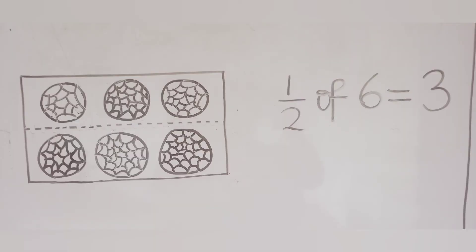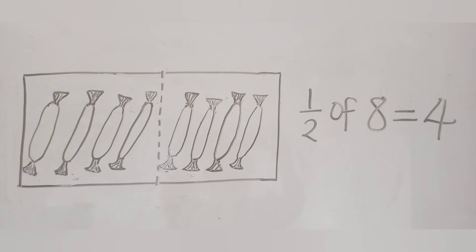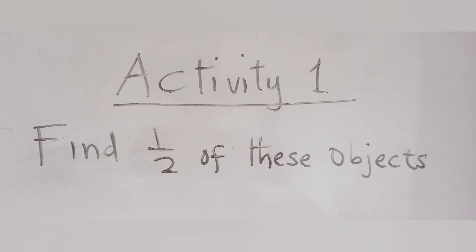Half of 6 balls is 3 balls. Half of 8 sweets is 4 sweets. Now, let's see if you can do this on your own. Activity 1. Find half of these objects.